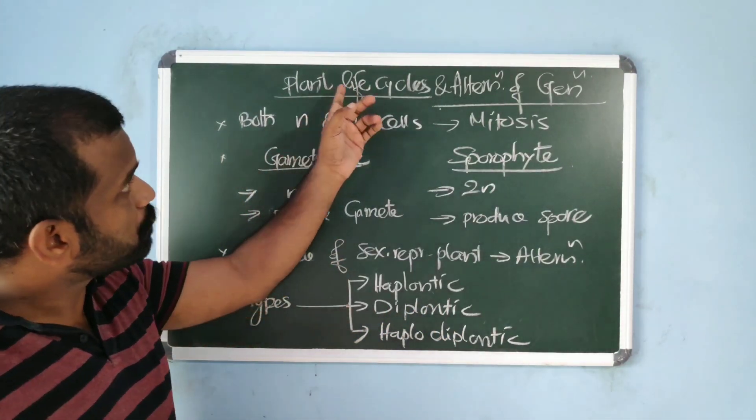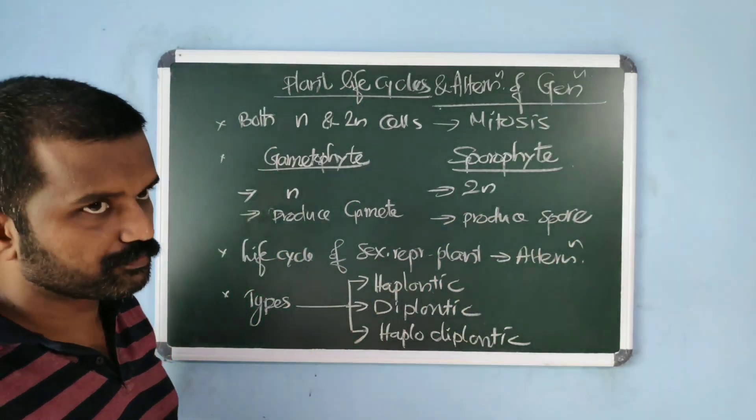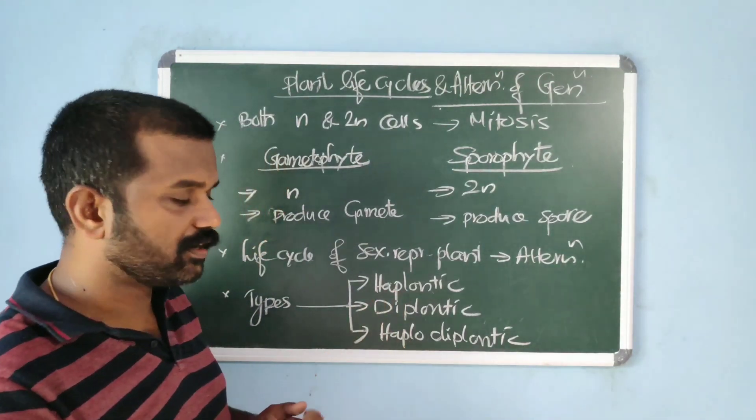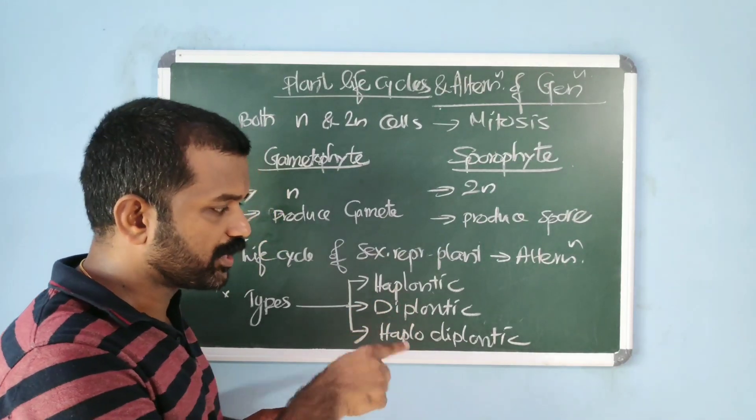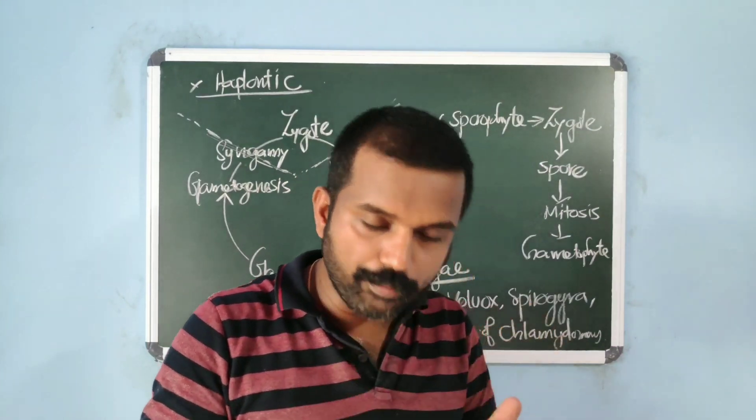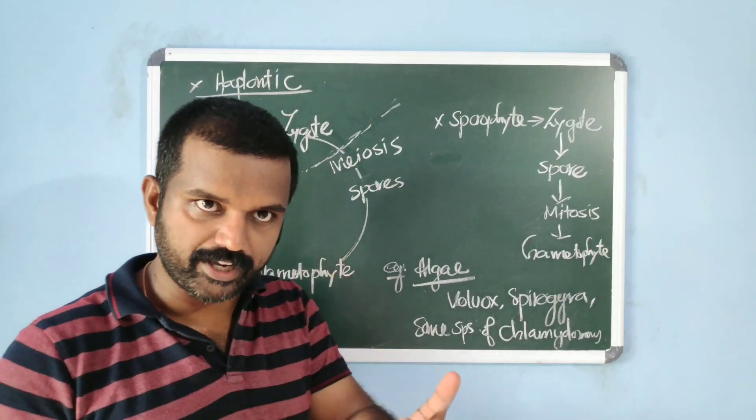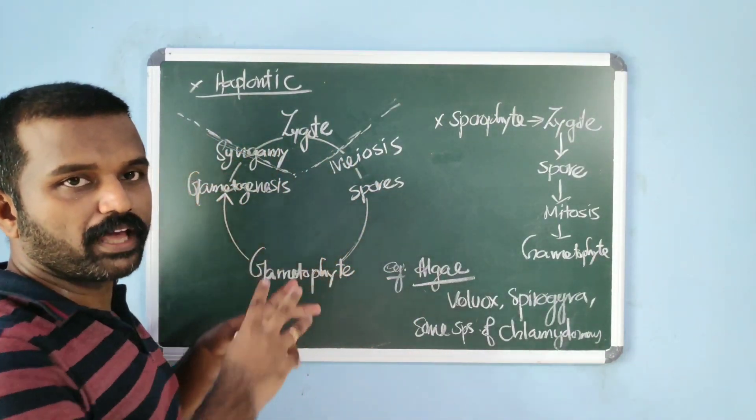Plant life cycles are broadly categorized into three types. The three types of plant life cycles are haplontic life cycle, diplontic life cycle, and haplodiplontic life cycle. In haplontic, the dominant plant body is gametophyte, that is gamete producing. So that forms the dominant plant body.